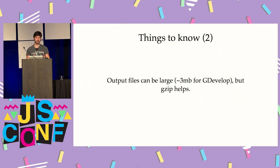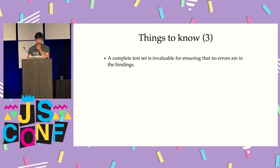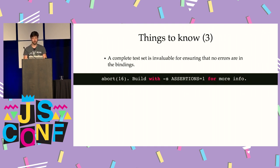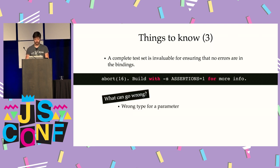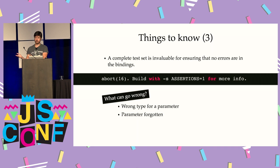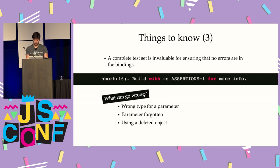Another thing to know: the output files are quite large. For GDevelop it's at least three megabytes when everything is compiled to the WebAssembly module. I don't really care because I'm making a rich desktop-style application, and knowing I'll package the whole thing in an Electron application that's a few hundred megabytes, three megabytes is not significant. Also, having a complete test set is really useful, because these are the kind of cryptic errors you get when something goes wrong in the WebAssembly module. This can happen if you have a wrong type for a parameter or forgot a parameter — instead of getting a number or boolean, you'll get undefined, which is translated to zero and everything breaks. Similarly, using a deleted object will crash.